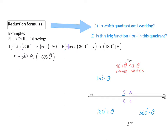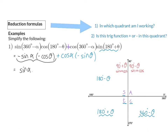cos(360 − α) is in the fourth quadrant where cos is positive, so it stays positive and becomes cos(α). sin(180 + θ) is in the third quadrant where tan is positive, so sin is negative and it becomes negative sin(θ). Simplifying per term: the first term has two negatives, so minus times minus gives plus — it becomes sin(α)cos(θ). The second term is plus times minus, giving minus cos(α)sin(θ).